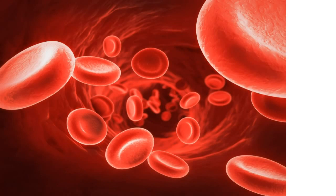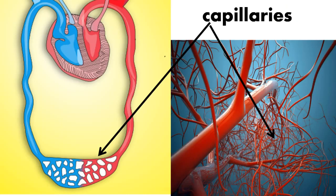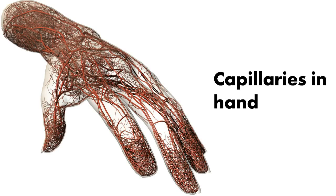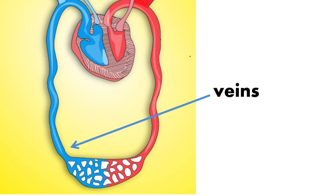On reaching an organ or tissue, the arteries divide into very thin tubes called capillaries. These tubes have very thin walls with pores, so small molecules like oxygen, glucose, and amino acids can exit the capillaries to reach tissues through diffusion. Carbon dioxide and waste from cells also enter these thin tubes through the pores. These thin tubes then fuse together to form veins, which carry blood back to the heart.